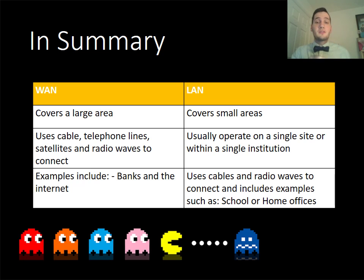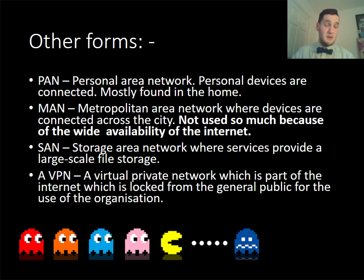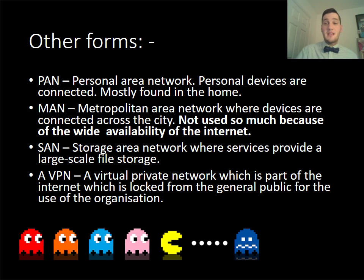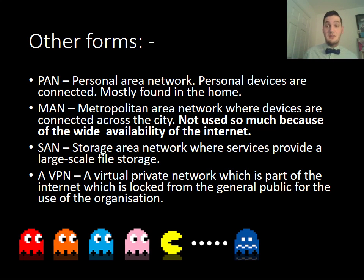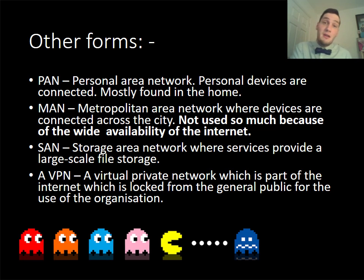A LAN is on a small site and we can use them in schools or home offices. There are four other types of network you'll need to know for the computer science exam. A PAN — personal area network — is generally when we use personal devices such as mobile phones and tablets to create a network. A metropolitan area network used to allow connection across cities using satellites but is less common now because we can connect sites using the internet and a WAN. A SAN — storage area network — is essentially a large file storage system for saving large amounts of files.